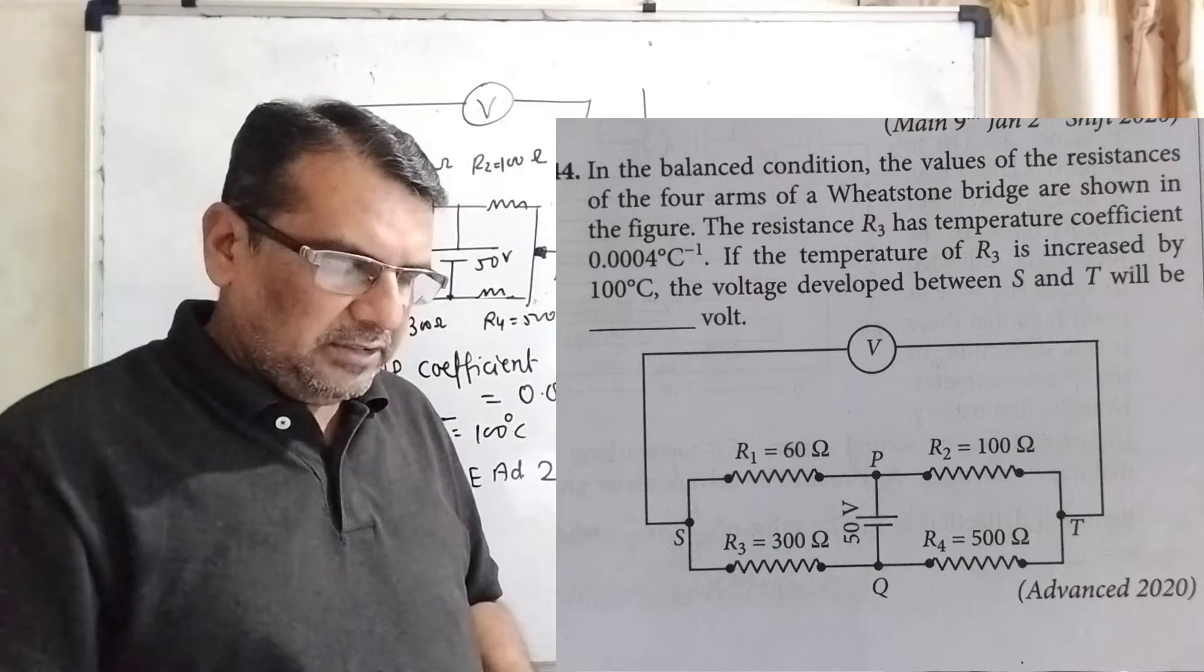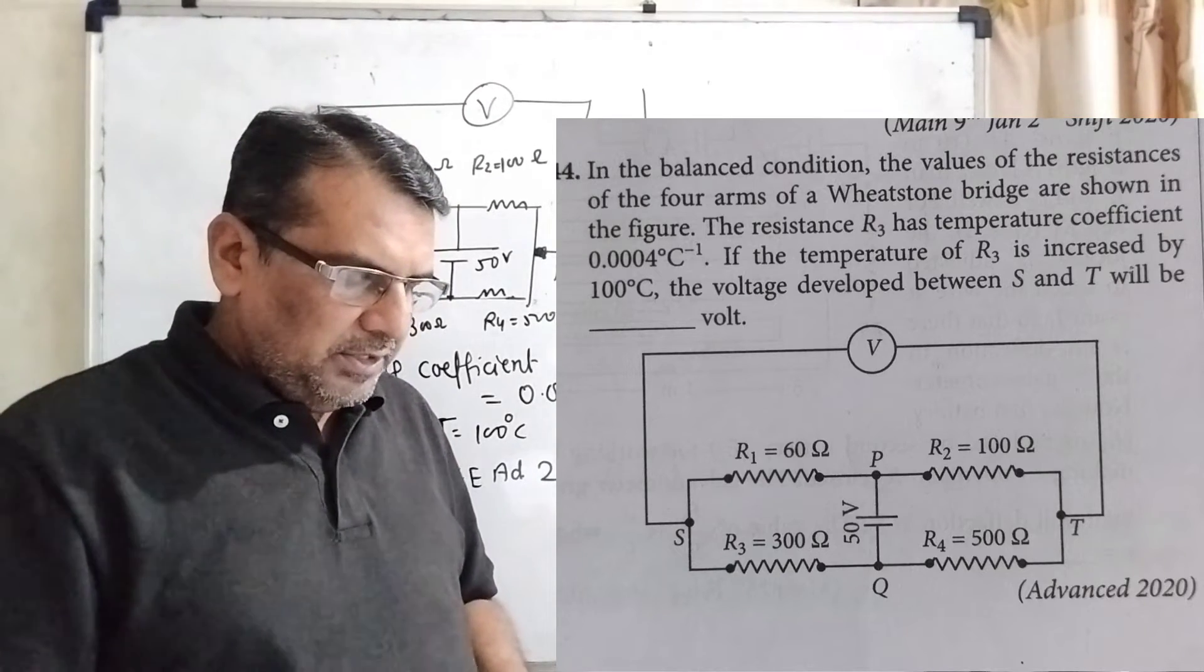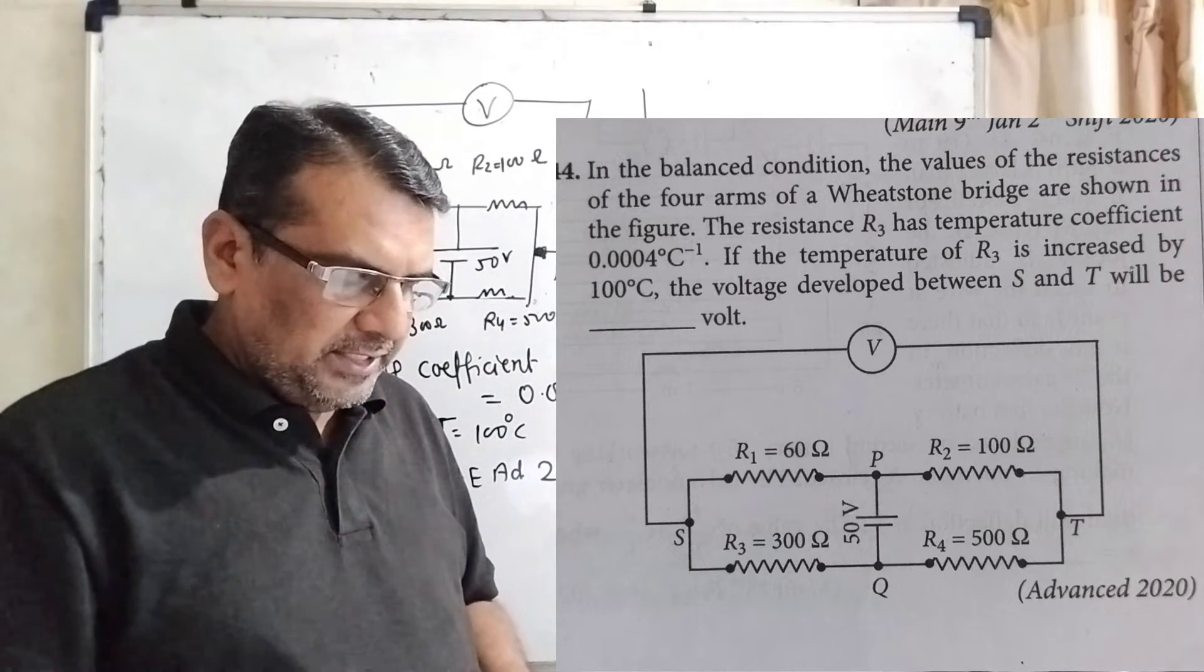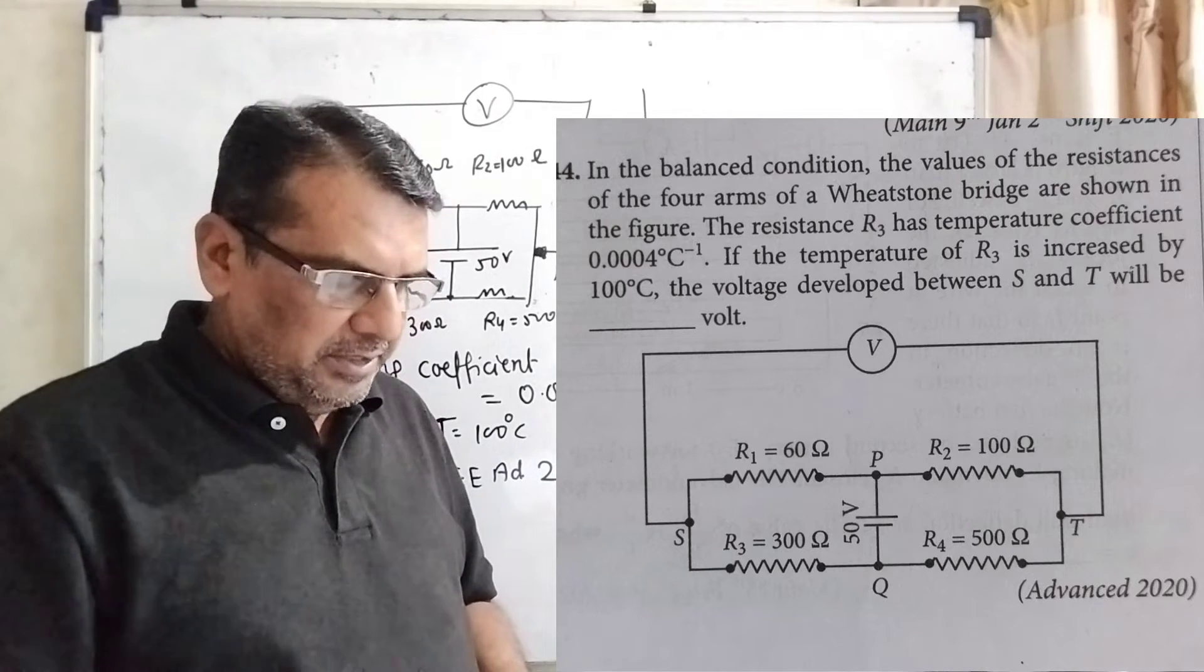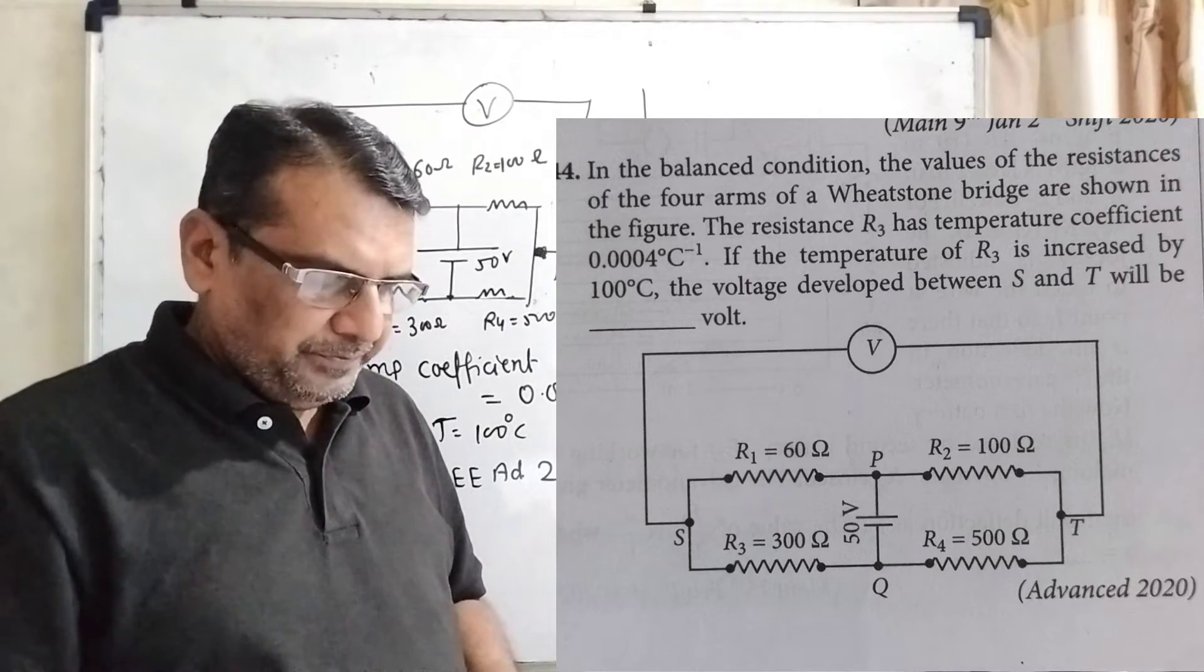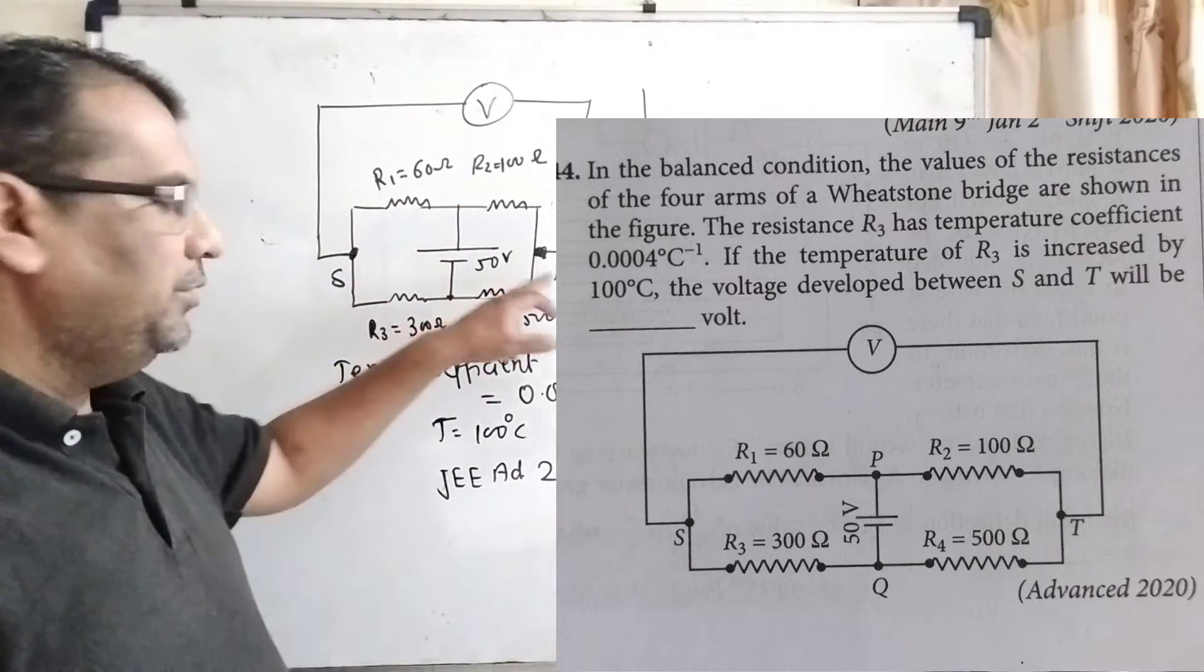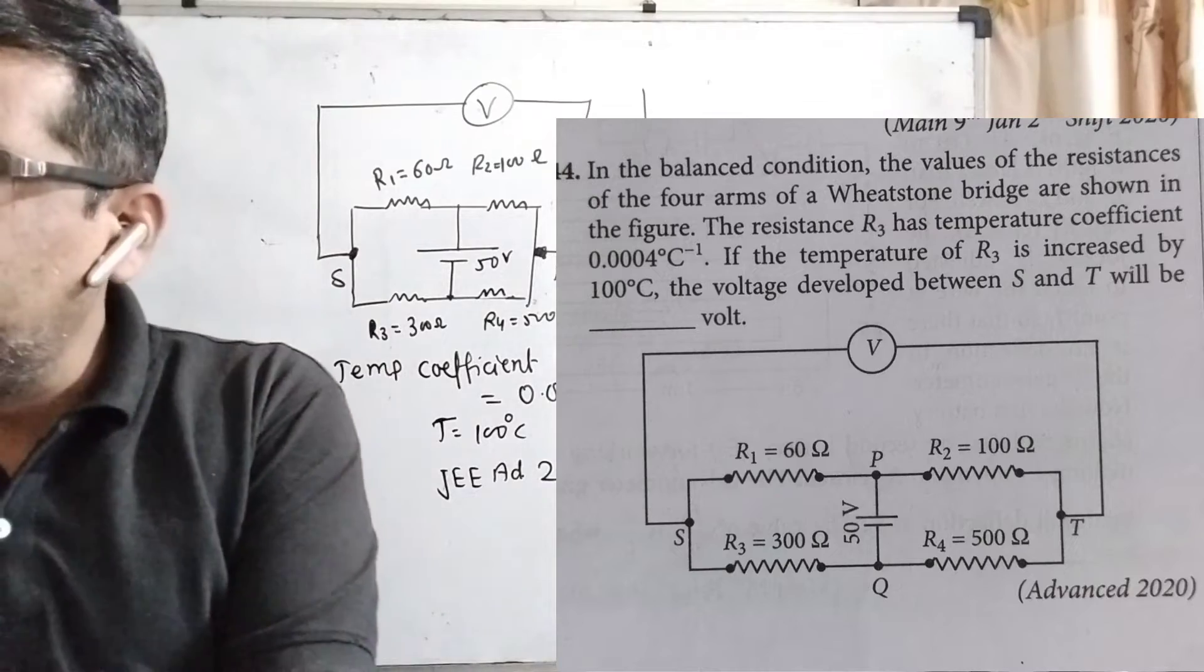The resistance R3 has temperature coefficient 0.0004 per degree Celsius. If the temperature of R3 is increased by 100 degrees Celsius, the voltage developed between S and T will be - we are asked this potential from S to T. This question is from JEE Advanced 2020.